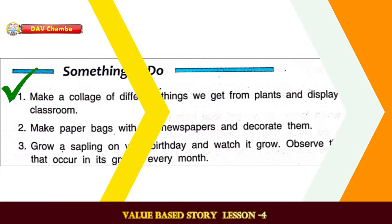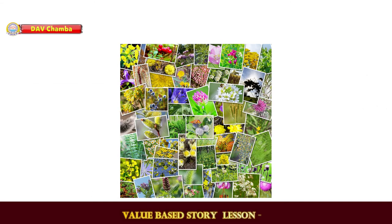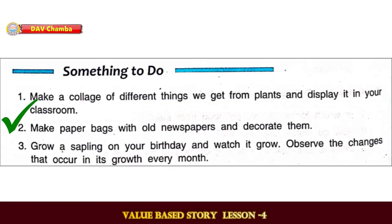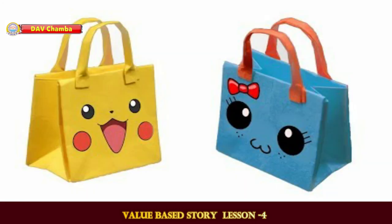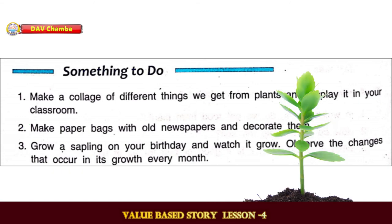Now something to do. First, make a collage of different things we get from plants. Second, make paper bags with old newspapers and decorate them. Third, grow a sapling on your birthday and watch it grow. Observe the changes that occur in its growth every month.